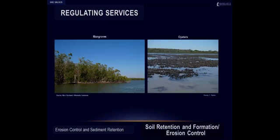Soil retention and formation and erosion control is the ecosystem's role in the formation, regeneration and retention of soil and in the reduction of erosion. This service includes the prevention of soil loss by wind and runoff. In these pictures, we see mangroves and oyster reefs, both very effective in reducing shoreline erosion by dissipating wave energy and stabilizing sediments.